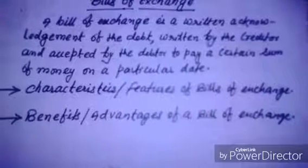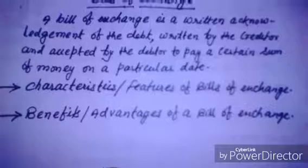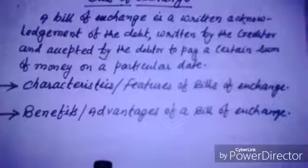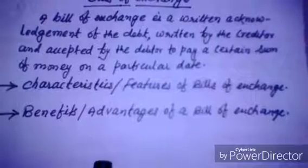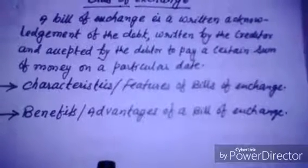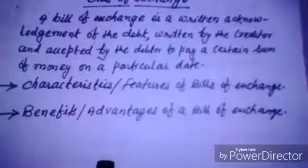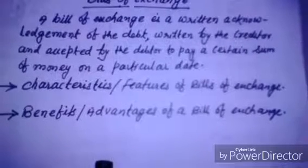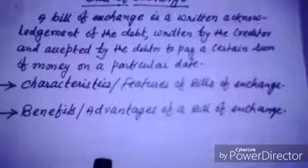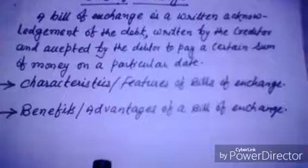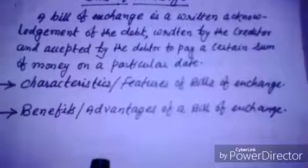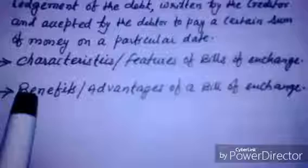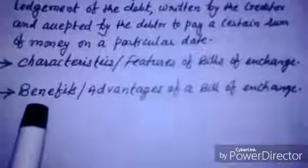Tenth, the amount mentioned in the bill is payable either on demand or on the expiry of a fixed period. Eleventh, it must be signed by the acceptor, that means the drawee. And twelfth, it must be stamped as per the requirement of law.